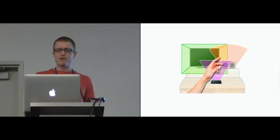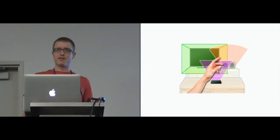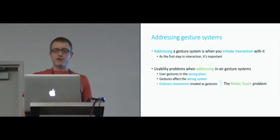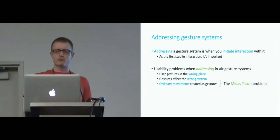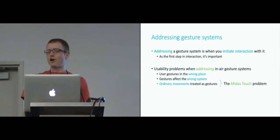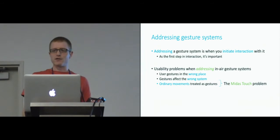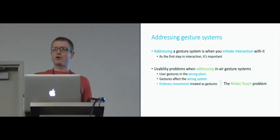There's also the risk of ordinary movements being treated as gestures unintentionally. For example, if the person in the image was to reach forward and pick up their phone, there's the chance that their TV might think that was a gesture. These are problems that occur when users address mid-air gesture systems. Addressing a gesture system is when you initiate interaction with it — it's the first step of interaction, happening before users actually do anything to control the system. The three usability problems at this stage are: gesturing in the wrong place, gestures affecting the wrong system, and ordinary movements having unintended effects — the last two more commonly known as the Midas touch problem.